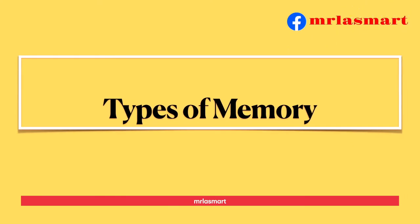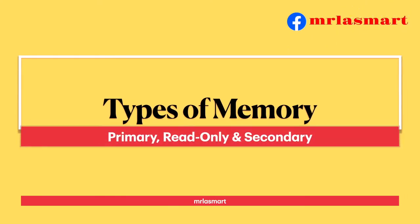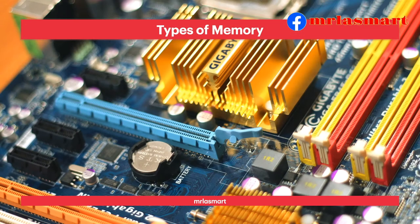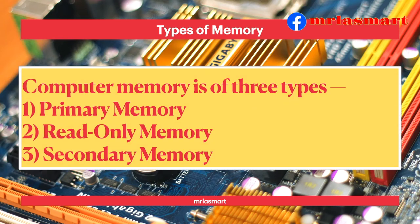Types of memory. Computer memory is of three types: 1. Primary memory, 2. Read only memory, 3. Secondary memory.